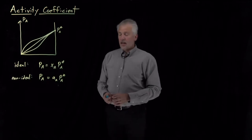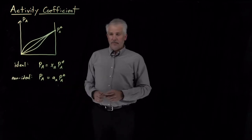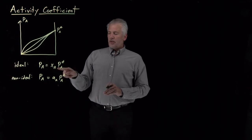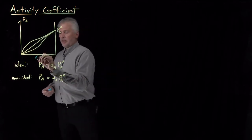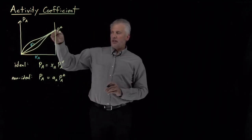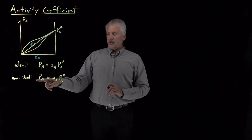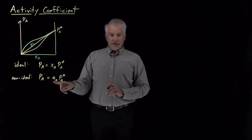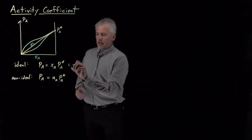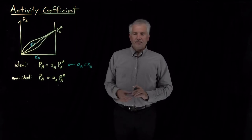If we want to measure how non-ideal a solution is, we need to use something other than the activity. For ideal solutions, partial pressure is linearly proportional to the mole fraction — this is the Raoult's Law behavior. We have different behaviors for solutions that exhibit positive or negative deviations from Raoult's Law, which we can capture with the equation: partial pressure equals activity multiplied by vapor pressure. In the specific case of an ideal solution, activity equals mole fraction, and we recover the ideal case.